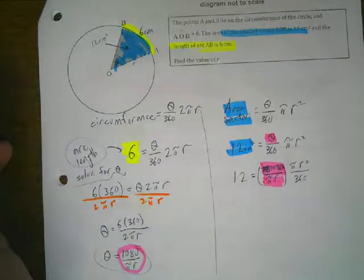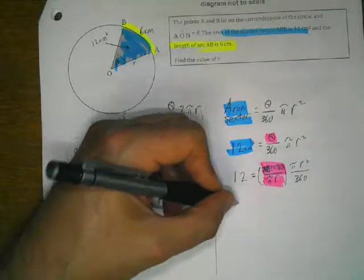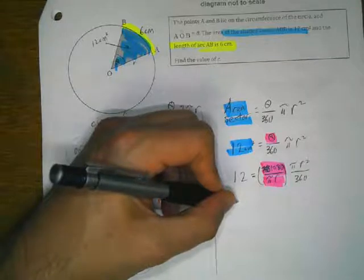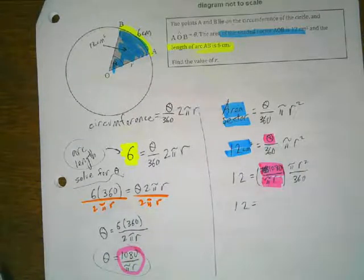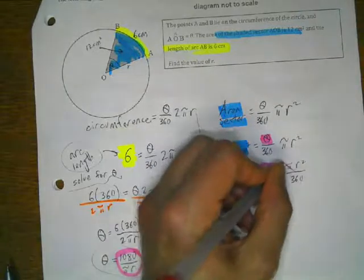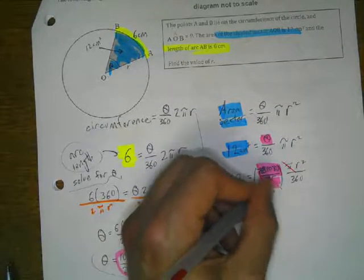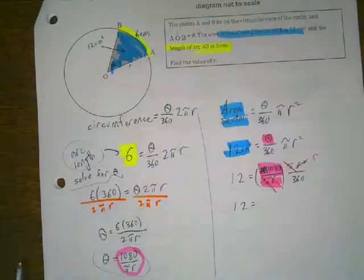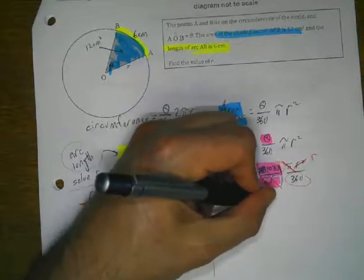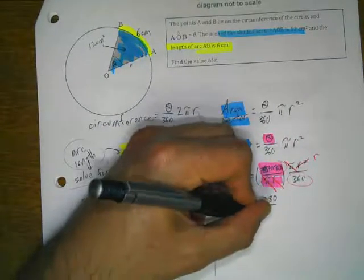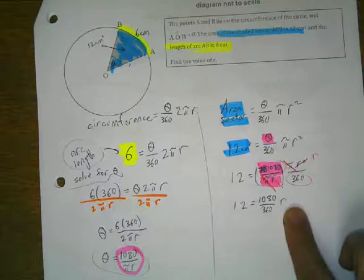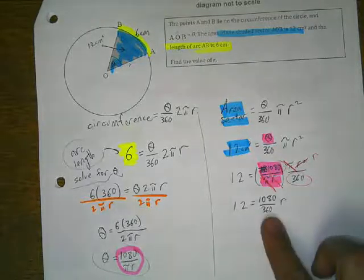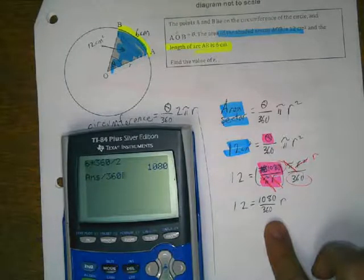Now we're going to be left with just r. The pi cancels out with the other pi, and one of the r's cancels out with one of the r's. We're left with 1080 divided by 360 times r. So what is 1080 divided by 360? We get 3. So we end up with 12 = 3r.